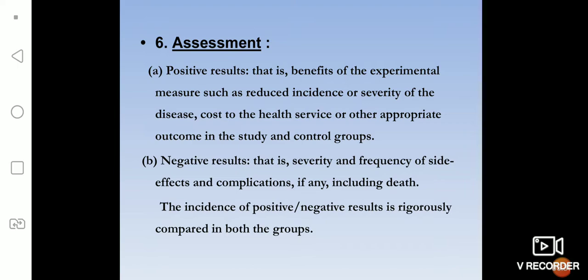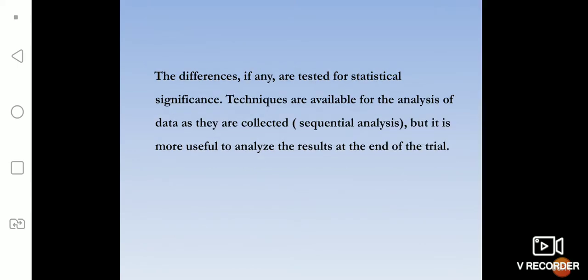For negative results, we assess whether the severity of the disease increased, frequency of side effects increased, complications were more, or deaths occurred when the new drug was given. These give the negative outcome of the new drug. The incidence of positive or negative results is rigorously compared between the control group and the experimental group to see which is better.